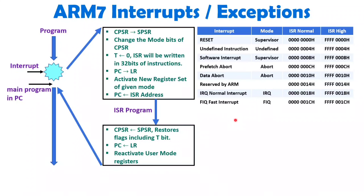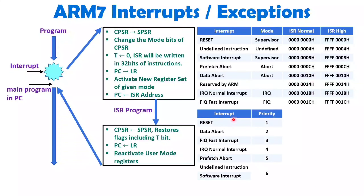With respect to priority, you should know how interrupts have priority in ARM7. Reset has the highest priority. Data Abort has the second highest priority. FIQ has third. IRQ has fourth. Prefetch Abort has fifth. Undefined Instruction and Software Interrupt have sixth priority. That is how priorities are there in ARM7.